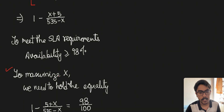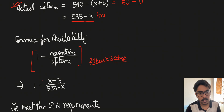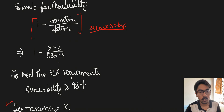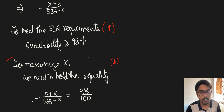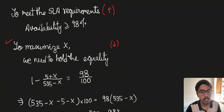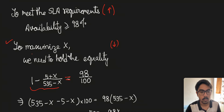We need to ensure that availability after reducing downtime from uptime is greater than or equal to 98%. We are also asked to maximize the value of X. Since X is in the subtrahend, as we increase X the availability decreases. We therefore equate availability to exactly 98%, because if it goes below 98%, the SLA requirements are no longer met — so it becomes an equality.